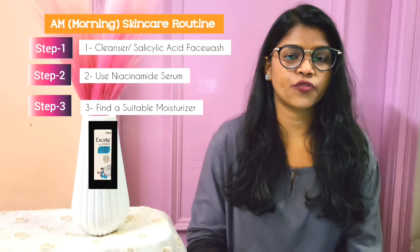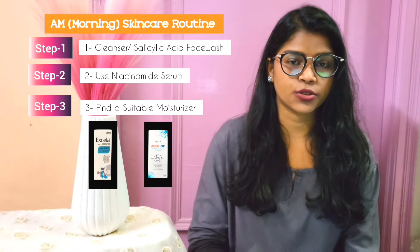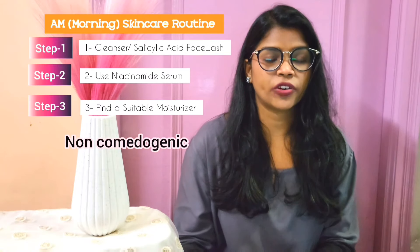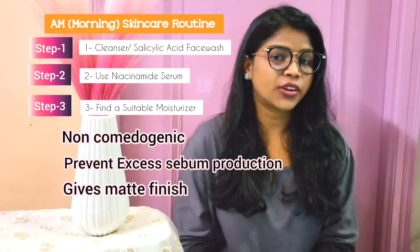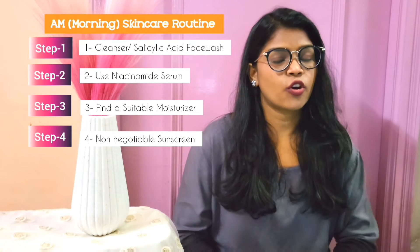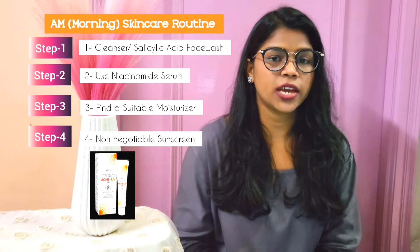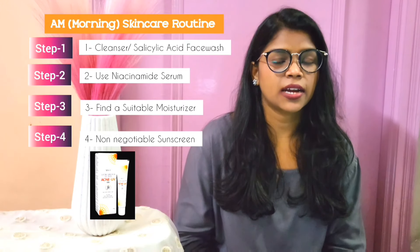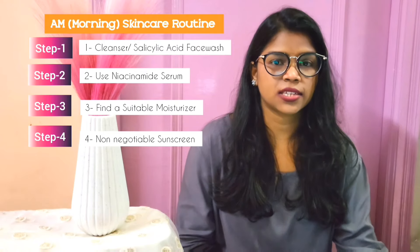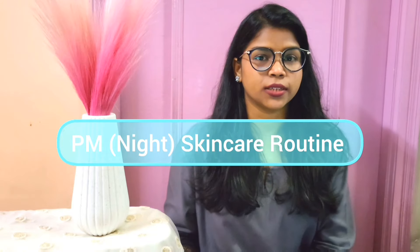Step three is moisturizer. Best moisturizer options for oily skin: number one is Excel moisturizer for oily, acne-prone skin; number two is Acne OC sebum control moisturizer. For sunscreen, number one is an SPF 50 with UVA and UVB protection, and number two is Klairs photon sunscreen with SPF 50 PA+++. Both sunscreens are lightweight and give no shiny finish.